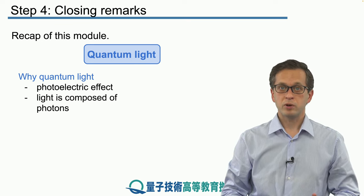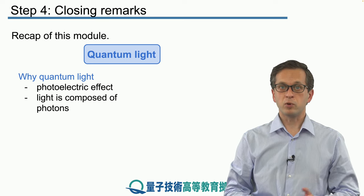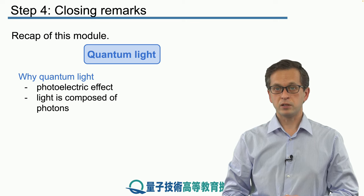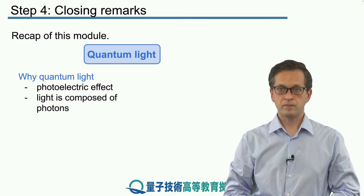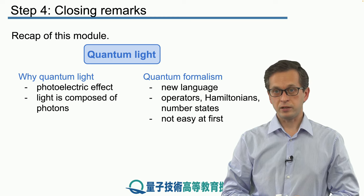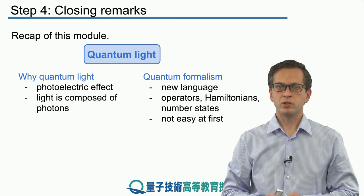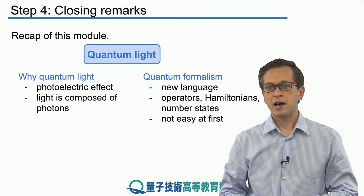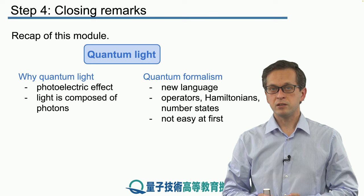So the next question was, how do we describe these photons? What language, what mathematical formalism do we need to talk about light as photons? That led us to the discussion of quantization of the electromagnetic field. This was a completely new language, and we talked about operators, Hamiltonians, and number states. I admit that this is not an easy topic at first.